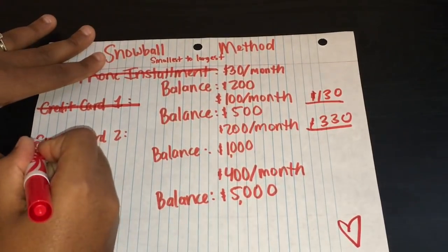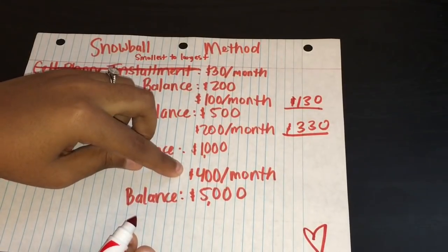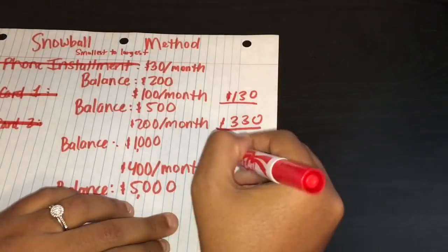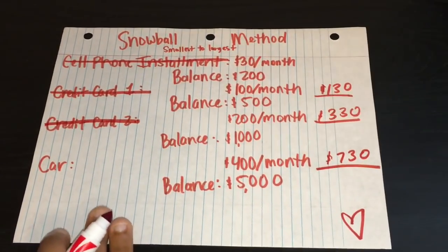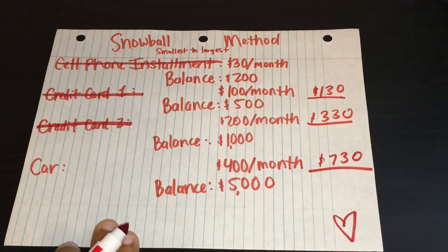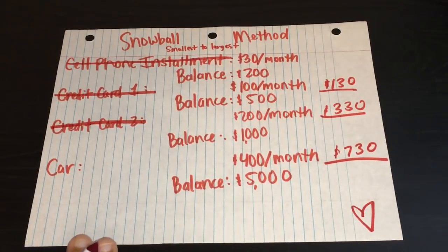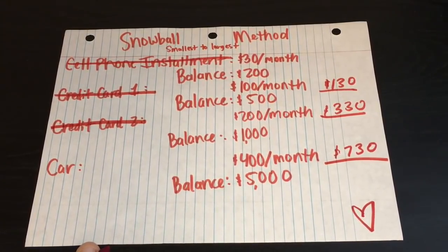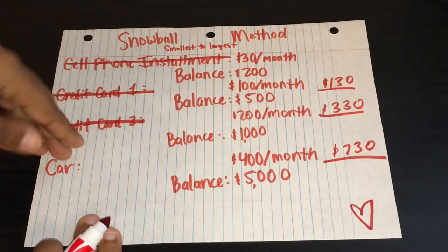Once you do that, you are then taking this $330 and you're adding it to your car payment. So every month you're now paying $400 plus $330, so that is $730 that you are putting towards your car — that's almost double the payment. So if the balance is only $5,000, the math is pretty easy. You just see how many times $730 is going to go into $5,000, and that'll tell you when you're going to have the car paid off at the minimum rate. At this rate, if you're following the snowball method, you will have about $730 to put towards your car every single month, knocking out a $5,000 balance pretty easily.